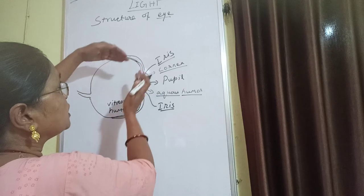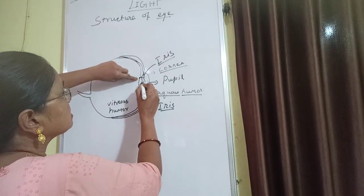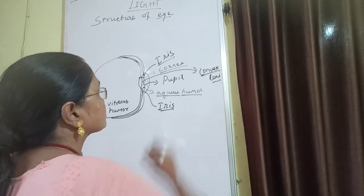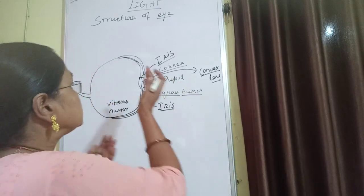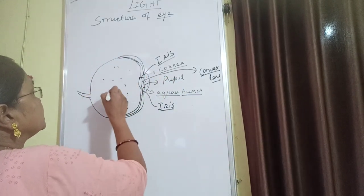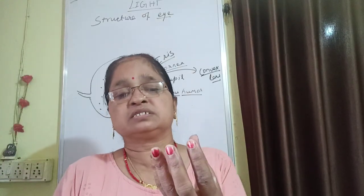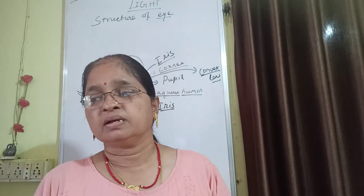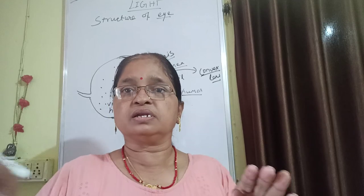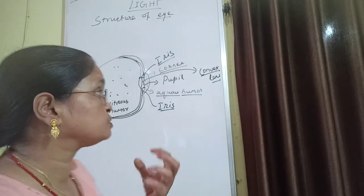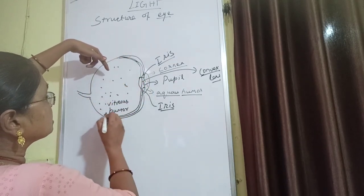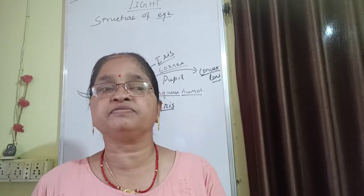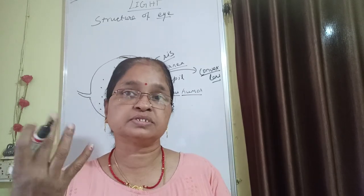Beside this pupil, there is a lens — that is a convex lens. And just beside the lens, there is a jelly-like fluid. It is neither a hard solid nor a flowing liquid. That jelly-like fluid present just beside the convex lens is known as vitreous humor. This vitreous humor maintains the structure of the eye and gives the eye its shape.